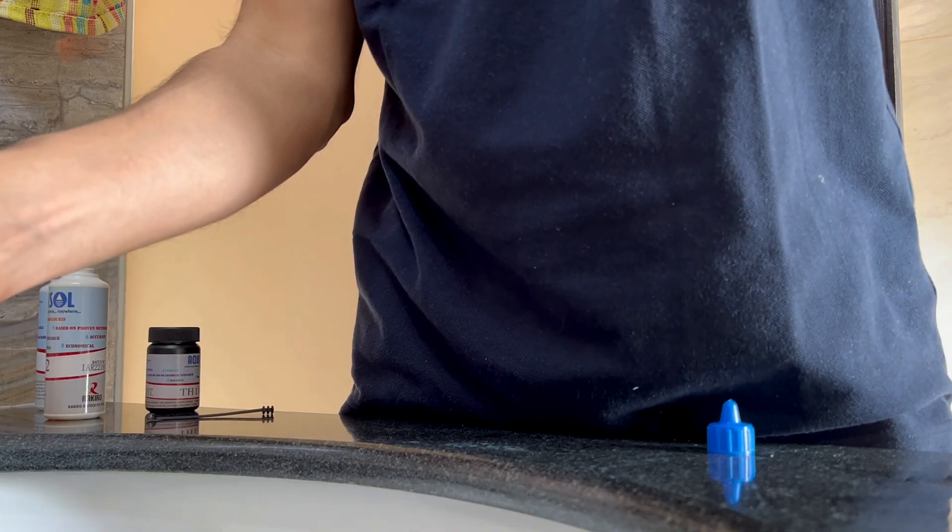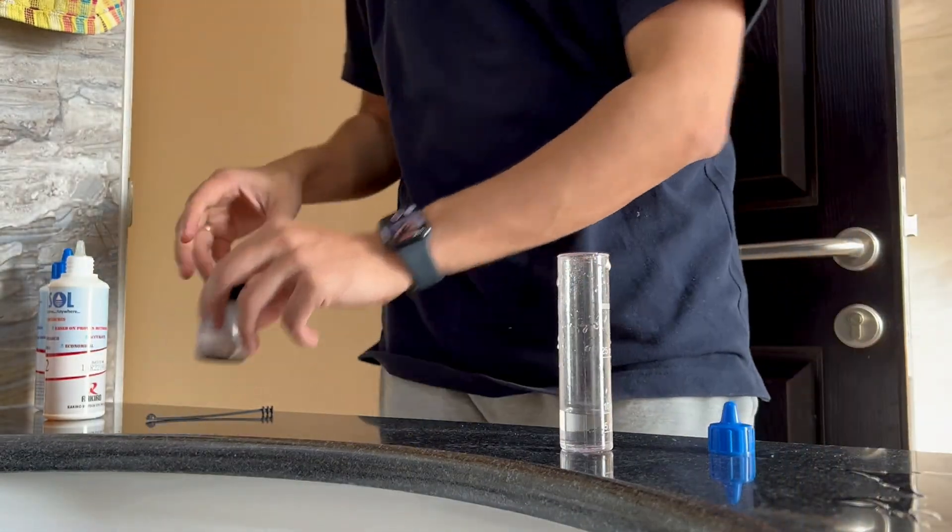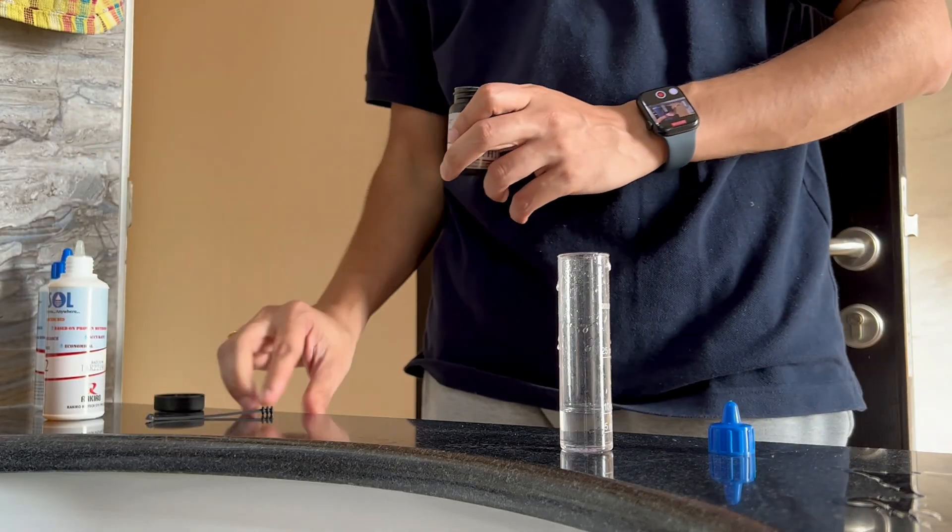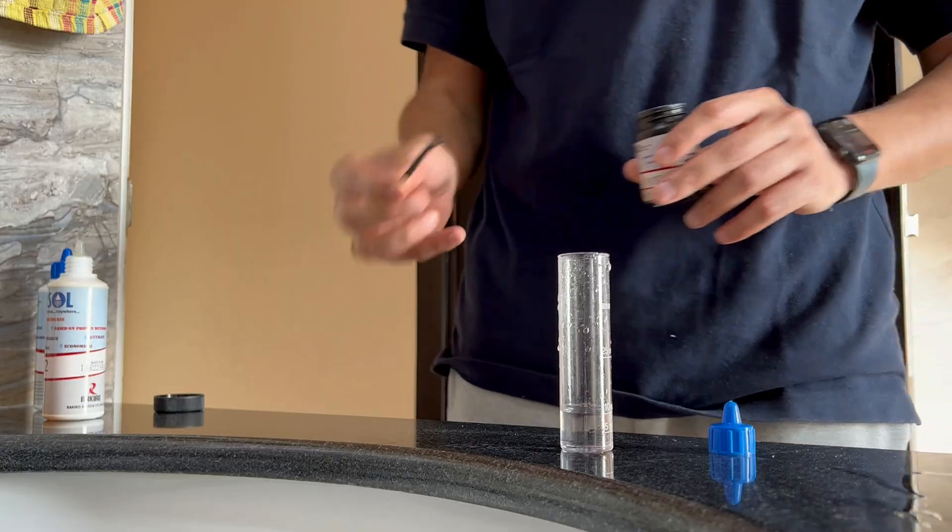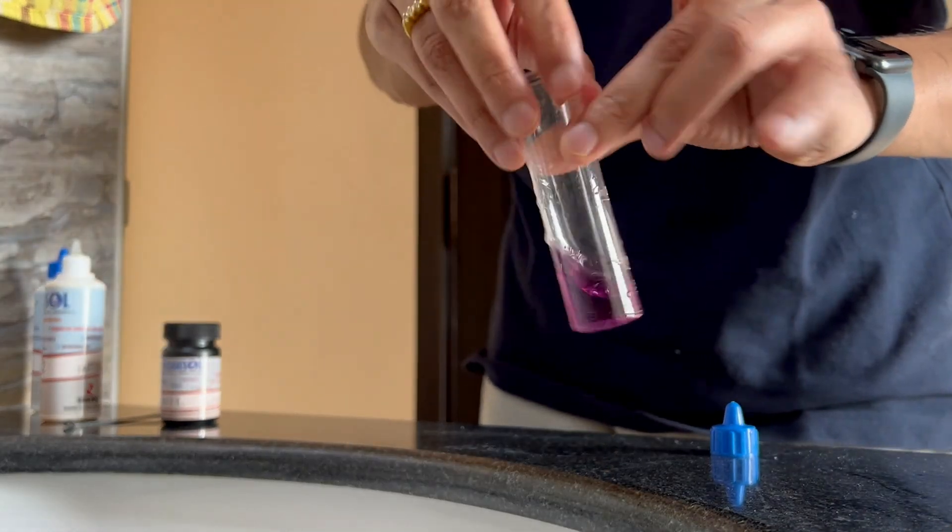Let's start again. The same process, we will start with 10 ml of water and then let's add TH1L, one spoon. Mix it well, you'll see the color change.